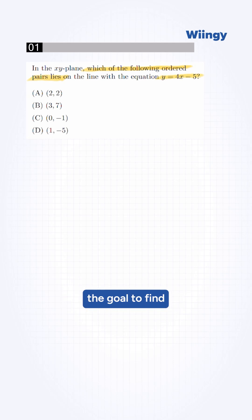We need to understand the goal. To find if a point is on the line, we need to plug in x and y coordinates into the equation. If the equation is true, the answer is correct.